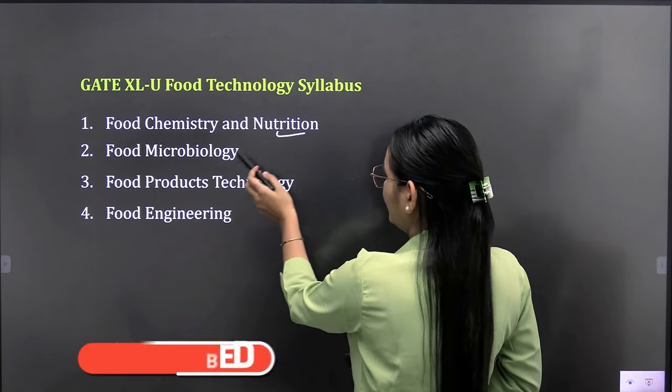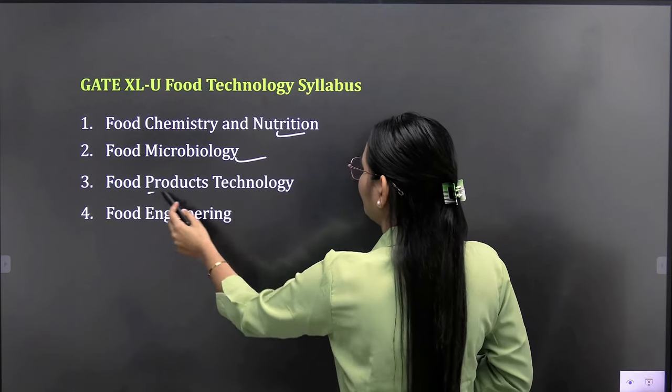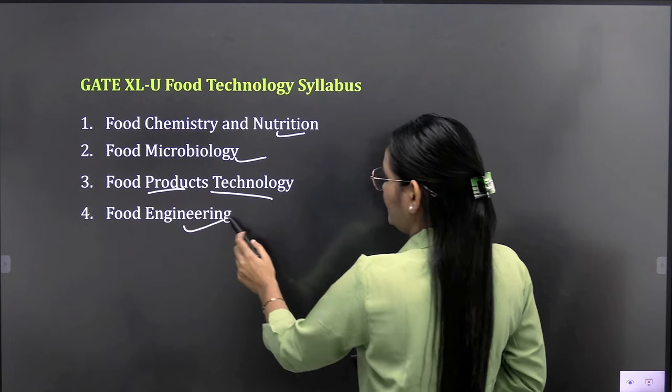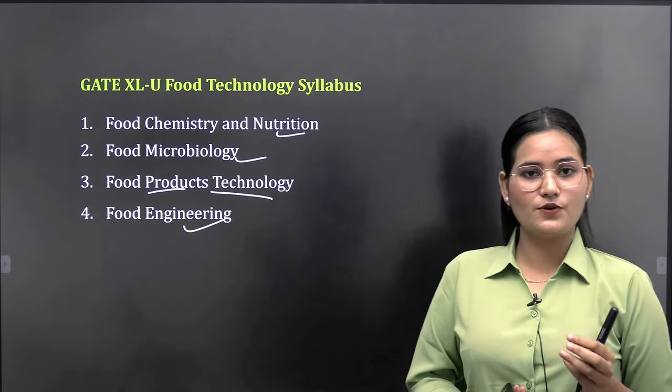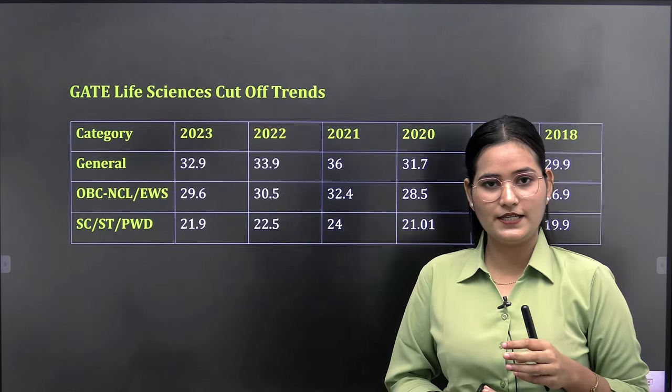Coming to the syllabus of food technology. You will study food chemistry and nutrition, food microbiology, food products and technology, and food engineering. These four sections you have to cover in food technology.